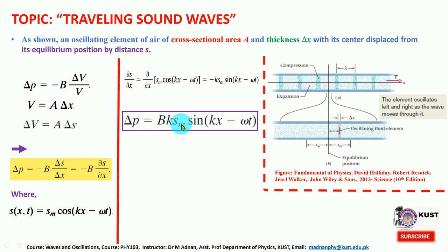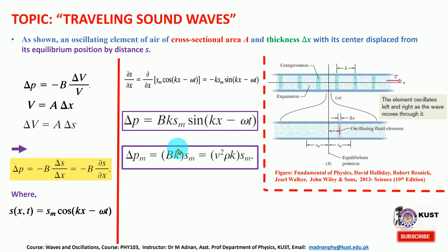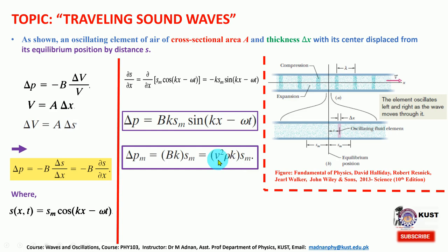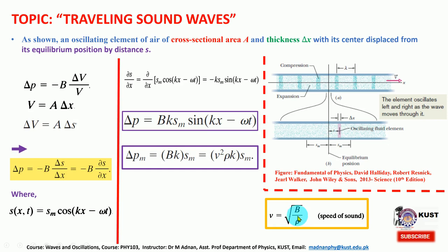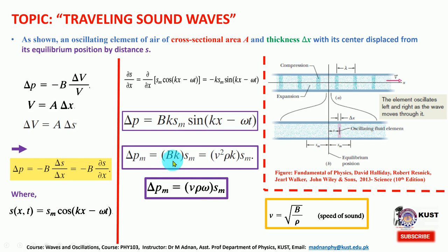On the last slide we saw graphically that delta p and delta s are out of phase by 90 degrees (pi/2). The amplitude of delta p is B times k times s_m. This can be converted using the density, and the maximum pressure amplitude delta p_m can be expressed as V times rho times omega times s_m. One can use either of these useful forms depending upon what is given.